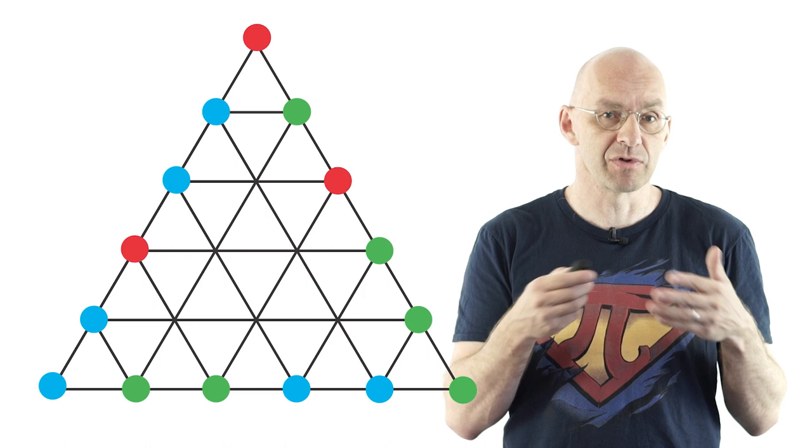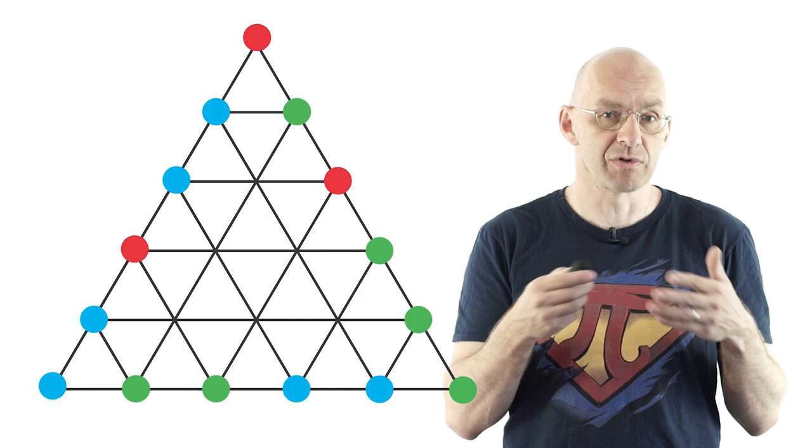Color the vertices in the middle randomly. No restriction. A part has to be red, green, blue. Okay? So maybe something like this.